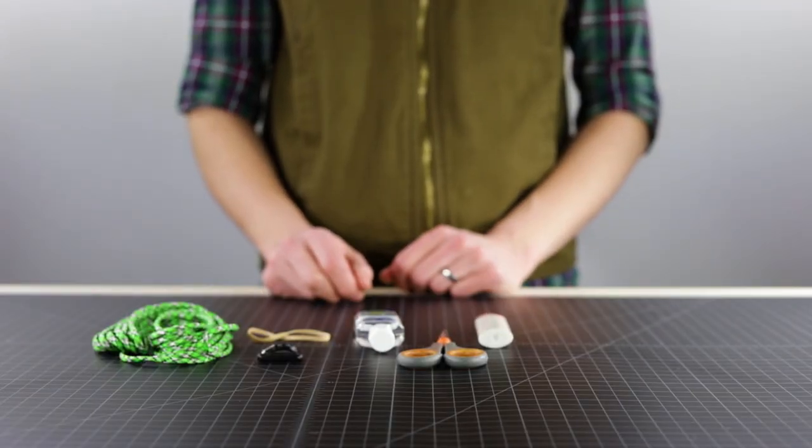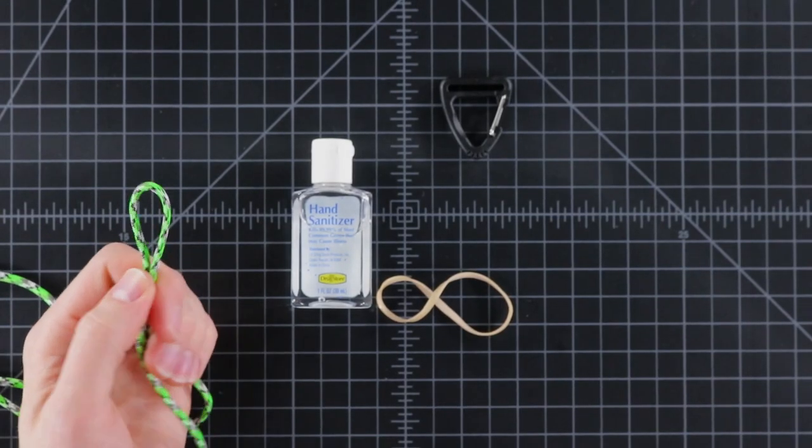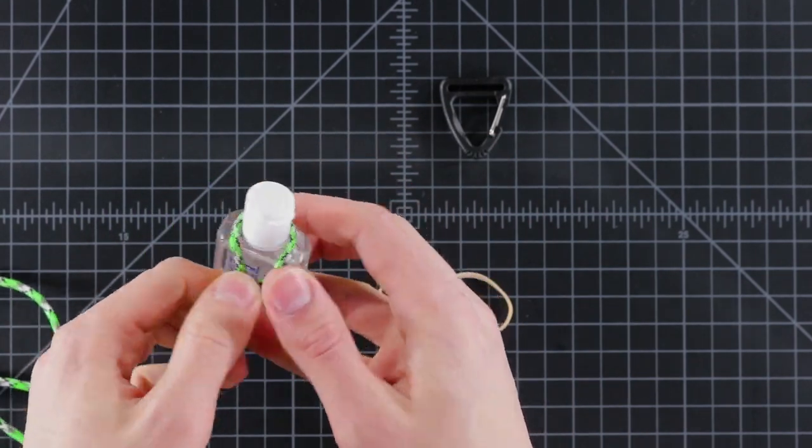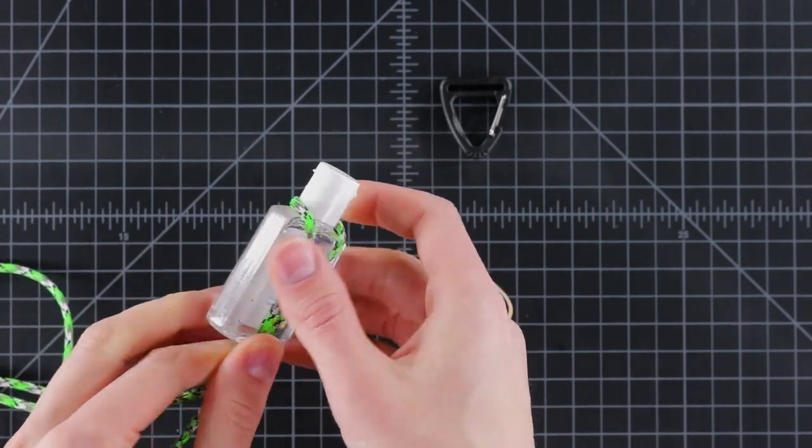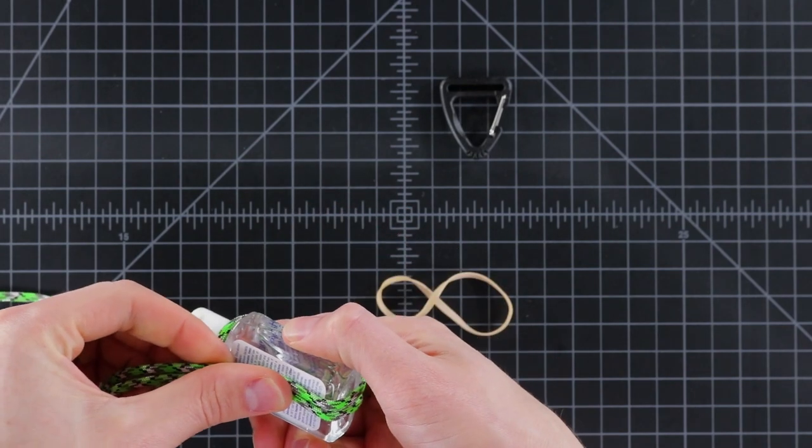Let's get sanitary. All right, so start by finding the middle of your cord and we're just going to wrap that around the neck of your hand sanitizer bottle. It's going to go down around underneath.